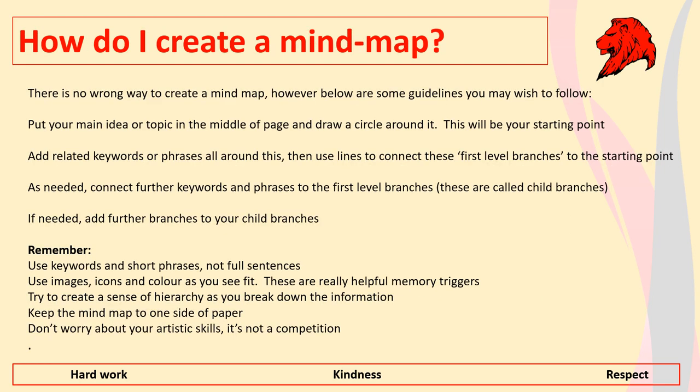So how do you go about creating a mind map? There's no real right or wrong way, but some guidelines you can follow to get you started are: put your main idea in the middle of the page, draw a circle or a square around it — whatever you prefer — and then add all the related keywords or phrases that you can think of to that main idea.